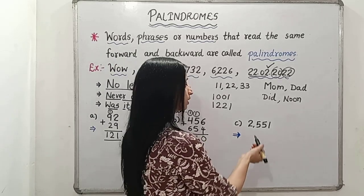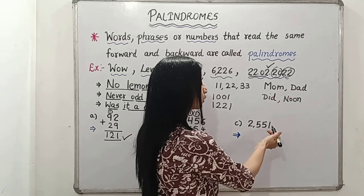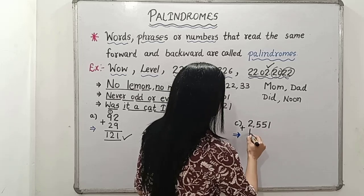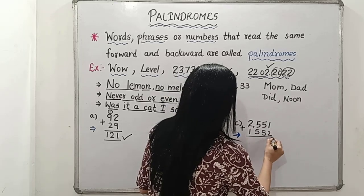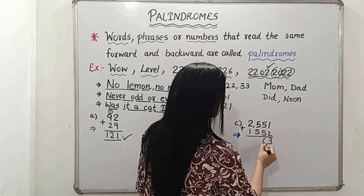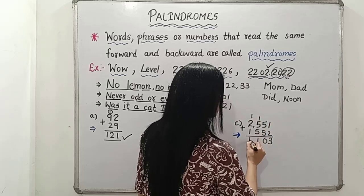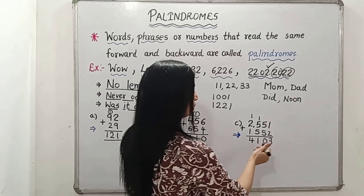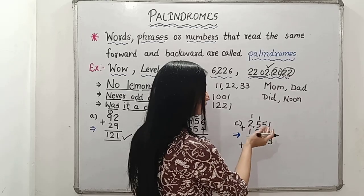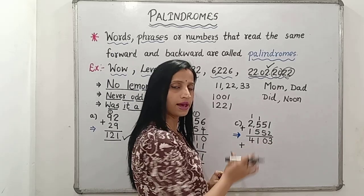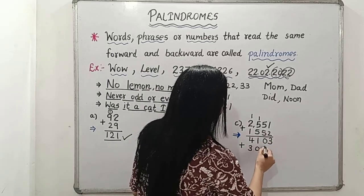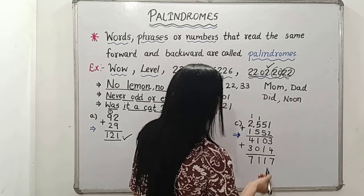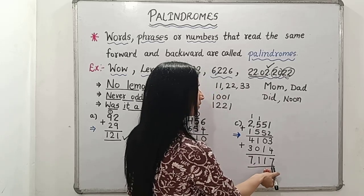The third example: the given number is 2551. The reverse is 1552. Adding them gives 4103, which is not a palindromic number. So we repeat: the reverse of 4103 is 3014. Adding: 3 plus 4 is 7, 1 plus 0 is 1, 0 plus 1 is 1, 4 plus 3 is 7. The result is 7117. The reverse of 7117 is also 7117, so it is a palindromic number. This is the way we convert any given number into a palindromic number.